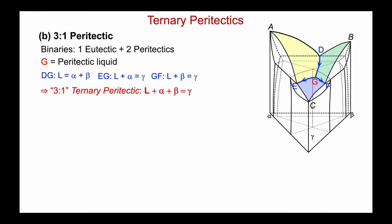That's the phraseology: three on the left, one on the right — three-to-one. We'll use a construct to represent the four-phase equilibrium. The compositions: alpha has composition M, beta has composition N, gamma has composition O, and G is the liquid lying outside the MON triangle. This reaction takes place at a fixed temperature — it's invariant, with four phases coexisting.